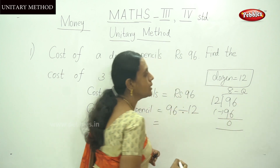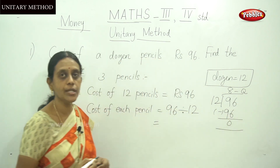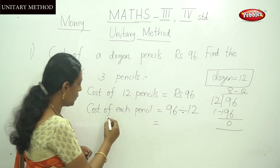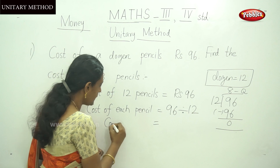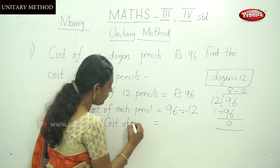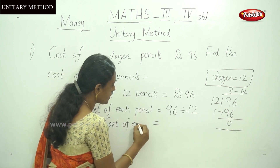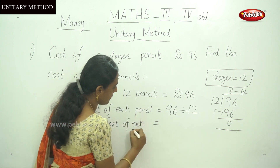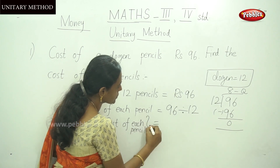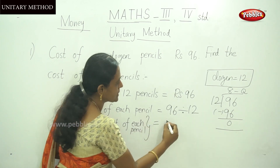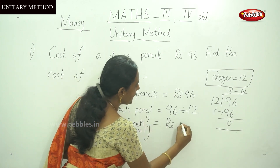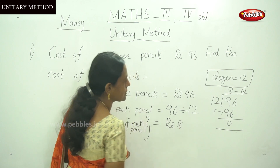The answer — the quotient — is 8. So the cost of each pencil is rupees 8.